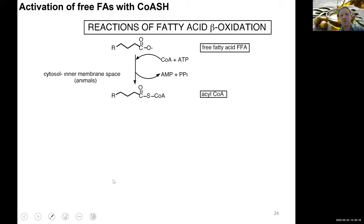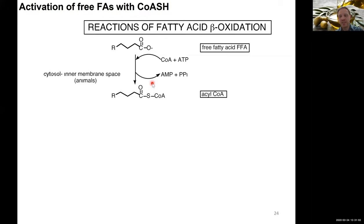The first step is activating the free fatty acid. Unlike breaking down sugars where activation happens via phosphorylation, here we use the CoA cofactor to activate the fatty acid, generating an acyl-CoA compound by attaching CoA to the carboxyl group. This costs significant energy — we need to break ATP all the way to AMP, meaning both phosphoanhydride bonds must be broken to realize this activation reaction.